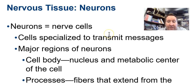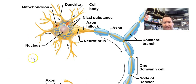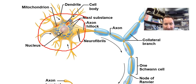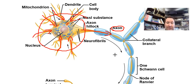Now we move on to the superstar of neural tissue: the neuron. The neuron consists of some major regions — the cell body and the processes that extend from it. This diagram shows a motor neuron. This is the cell body up here, and the extensions coming off it are called processes. We have two types: processes that send information to the cell body are called dendrites, and processes sending information away from the cell body are called axons.